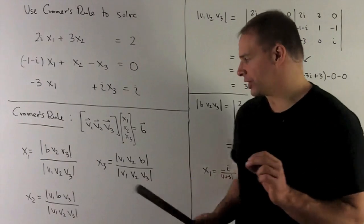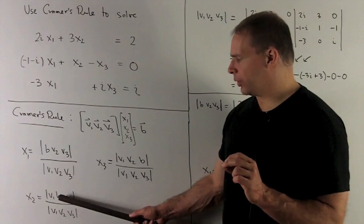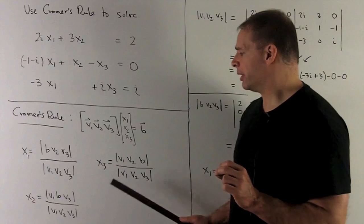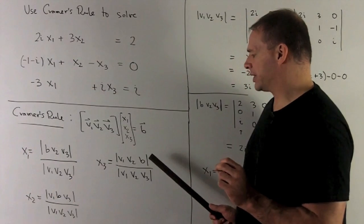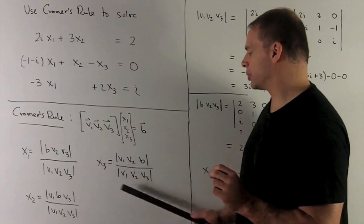For X2, we just replace V2 with B, same procedure. For X3, we replace V3 with B, same procedure. So let's proceed.